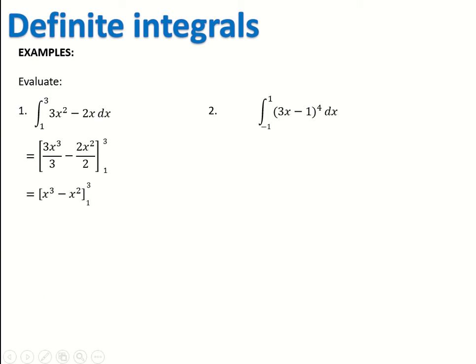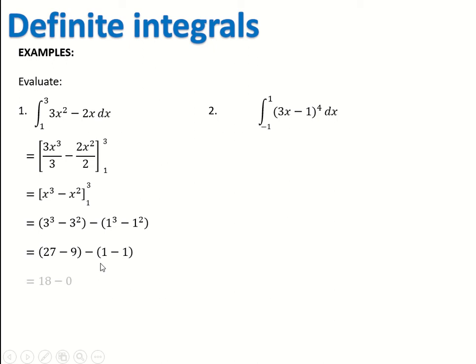That gives us the equation x cubed minus x squared. We substitute 3 in first, work out what that is, and then substitute 1 in, and take those two away. So we're doing 3 cubed minus 3 squared, minus the bracket 1 cubed minus 1 squared. 3 cubed is 27, 3 squared is 9, 1 cubed is 1, 1 squared is 1. So it's 27 minus 9, take away 1 minus 1. 27 minus 9 is 18, 1 minus 1 is 0, so it's 18 minus 0, which is just 18. That's all we need to know — we can leave our answer as 18.